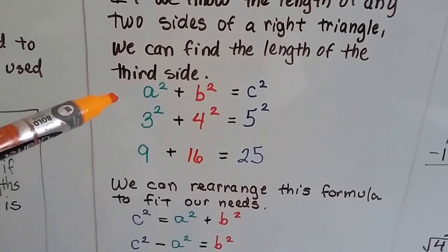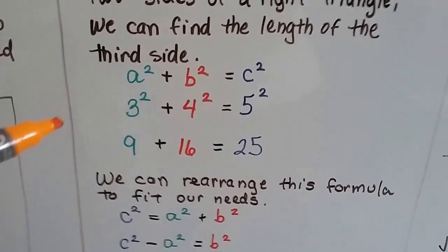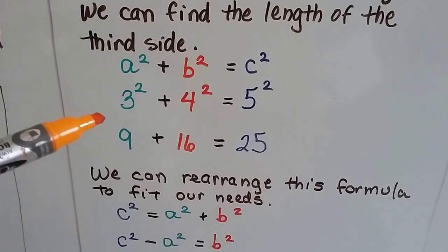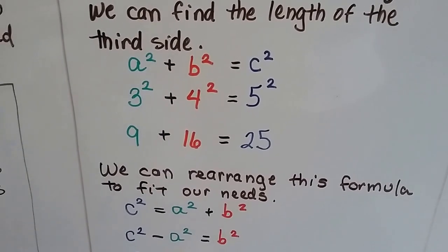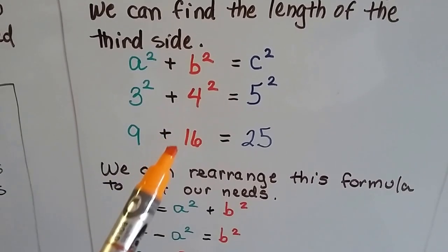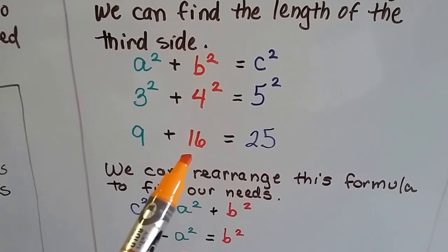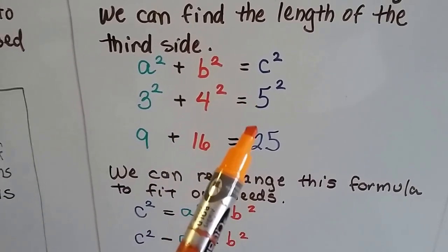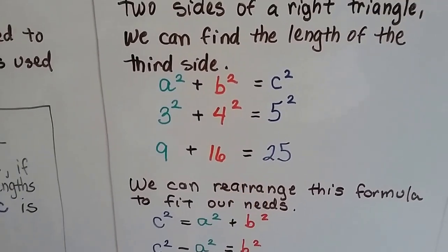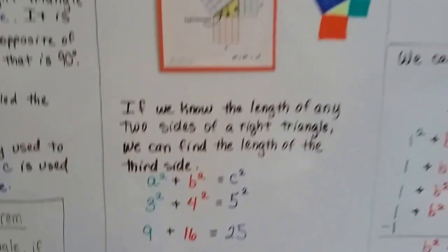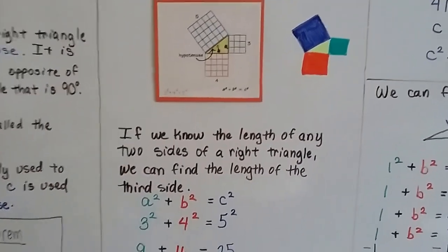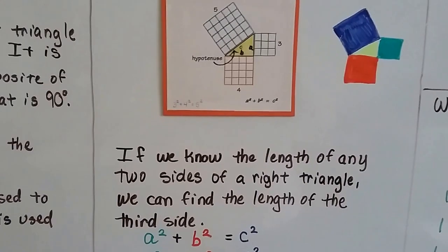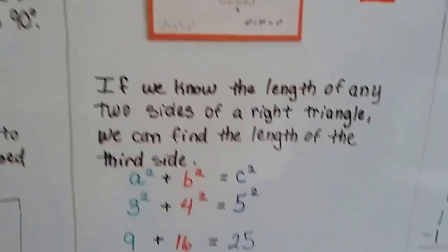So if a squared plus b squared equals c squared, and if a is a 3, then we'd have 3 times 3, that's a 9. And if b is a 4, we'd have 4 times 4, that's a 16. And if c is a 5, then we'd have 5 times 5, and that's 25. And we can see we've got 9, 16, and 25 for our sides. For each square.